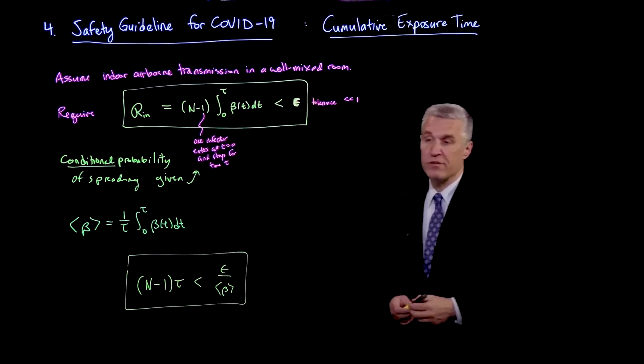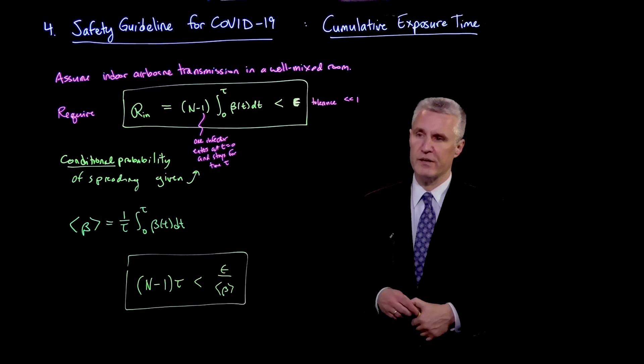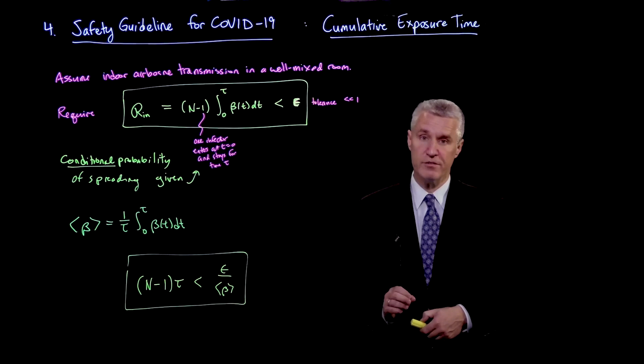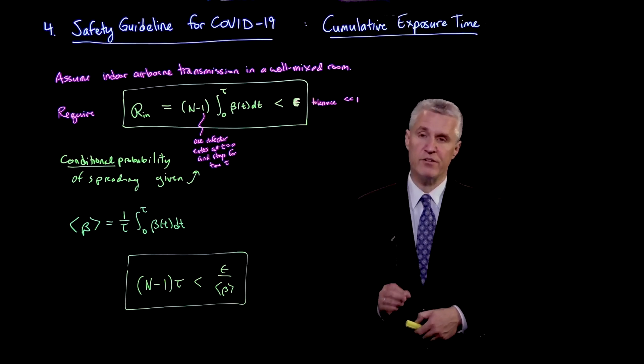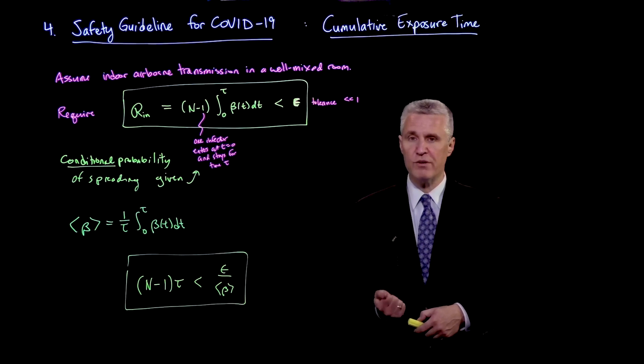This is a very simple and very general relationship, which does not depend on the details of beta. But what it's telling you is something which already you may recognize is very different than any of the existing official safety guidelines. Official safety guidelines always limit one quantity. For example.